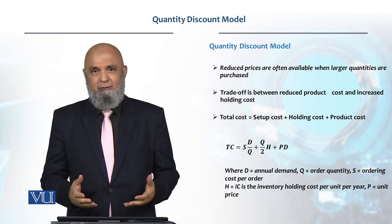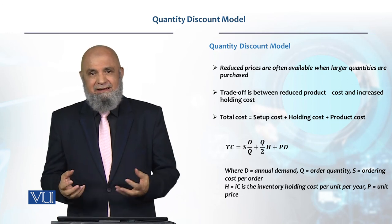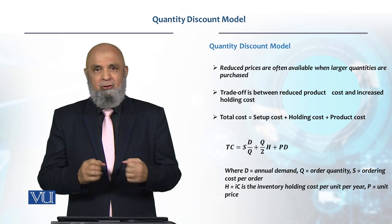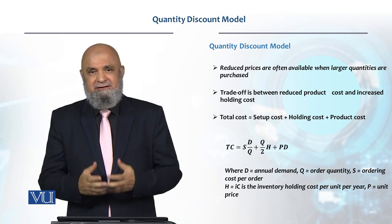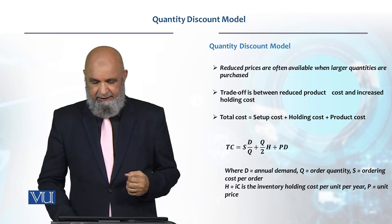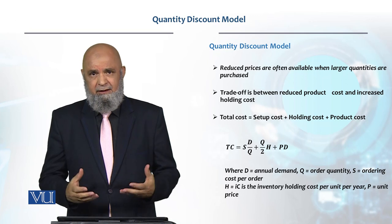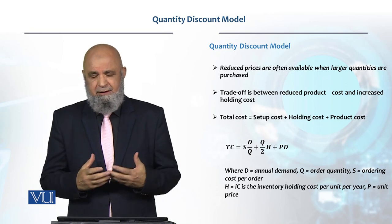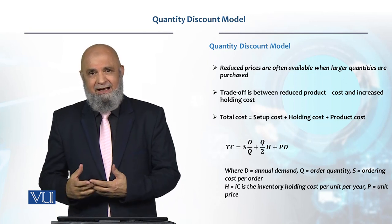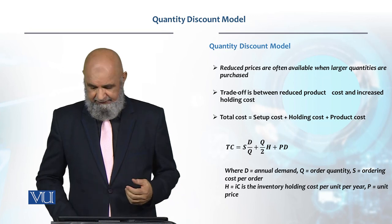The total cost is the annual setup cost plus annual inventory holding cost. But because our purchase price is also different under quantity discounts, we include the purchase cost too. So the total cost is: annual ordering cost plus annual holding cost plus P multiplied by D, where P is the purchase price and D is the annual demand.